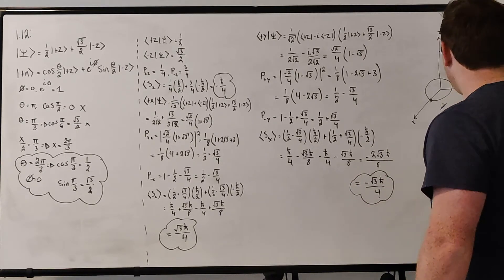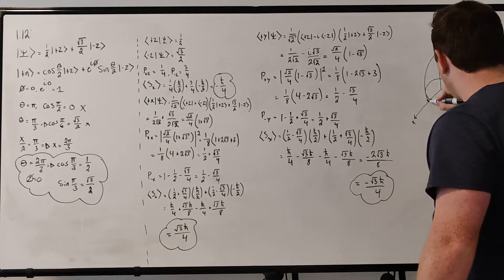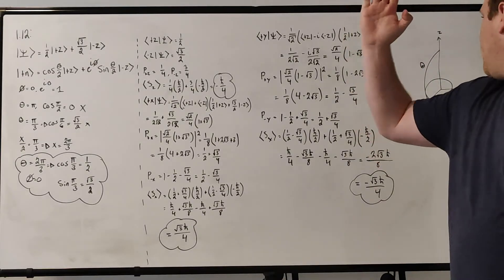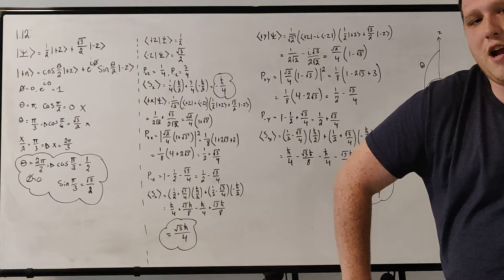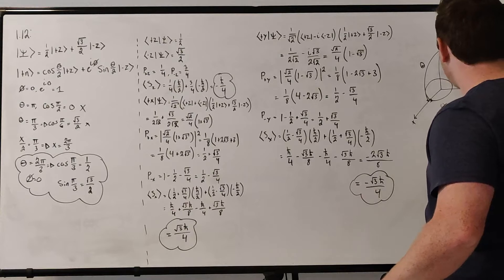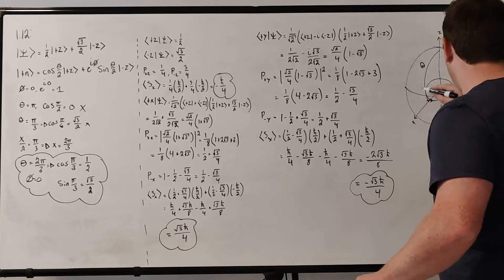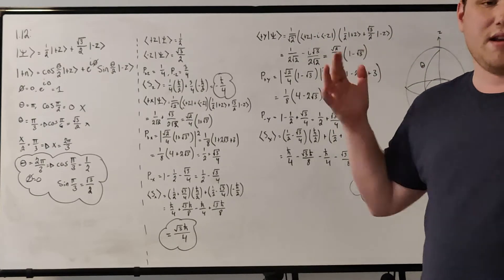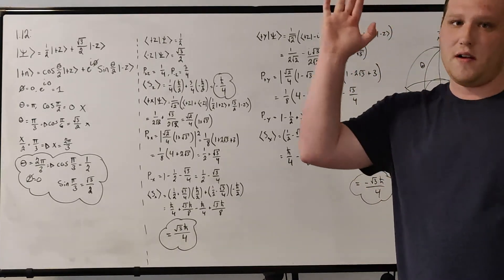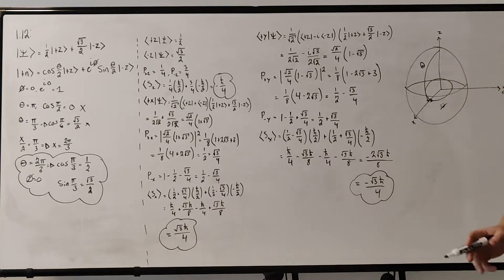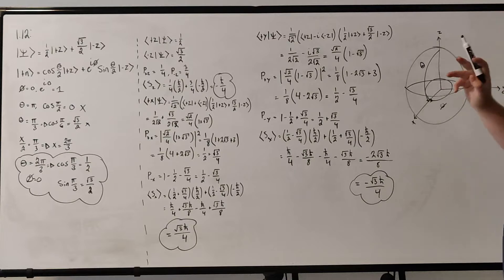Phi is the angle from the x axis going along the plane, going around the xy plane, going around that way. And theta is measured from the z axis, kind of going down like this, from zero to pi over two. If you think of it as a sphere, you can reach any point on the surface of the sphere with two coordinates, theta and phi. This is what they call the Bloch sphere, and you can define any point on this Bloch sphere, on the surface of the sphere, with the two numbers theta and phi.